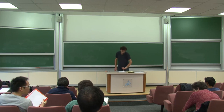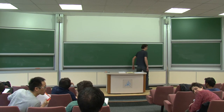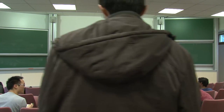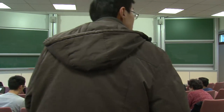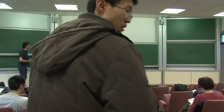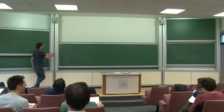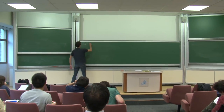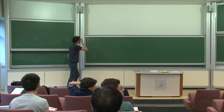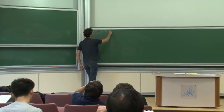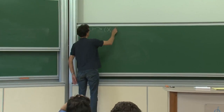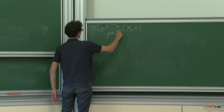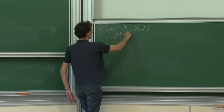Lors du dernier exposé, j'ai longuement parlé de mesures stationnaires. L'une des annonces principales que j'ai faites est que j'ai introduit un nouvel objet : quand on a un groupe G muni d'une mesure mu, on considère un espace X muni d'une mesure de probabilité nu, où nu est stationnaire.